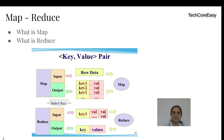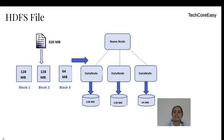In Hadoop and the big data world, the MapReduce phase always accepts the input in key-value pair format and returns the output in key-value pair format.